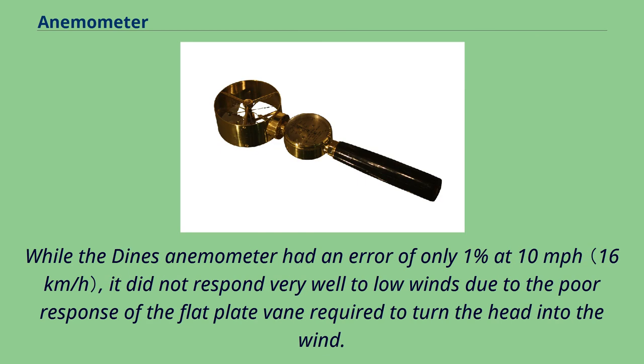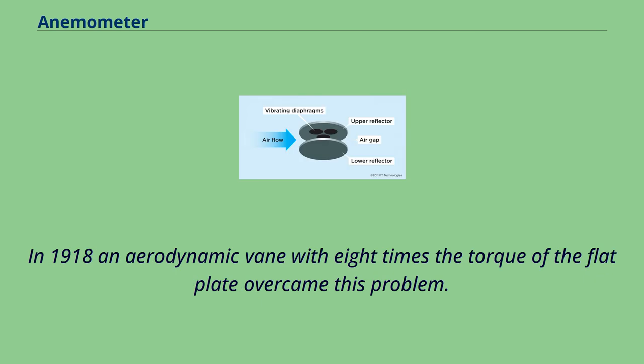While the Dines anemometer had an error of only 1% at 10 miles per hour, it did not respond very well to low winds due to the poor response of the flat plate vane required to turn the head into the wind. In 1918 an aerodynamic vane with eight times the torque of the flat plate overcame this problem.